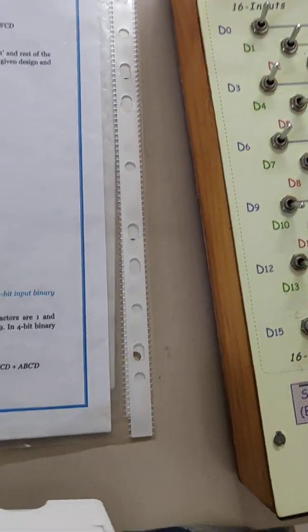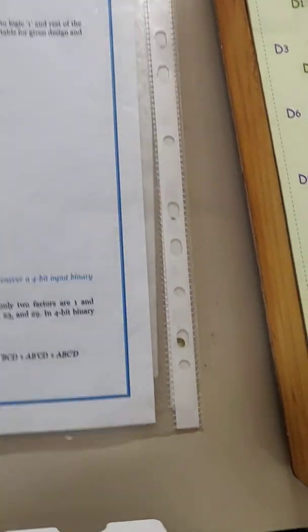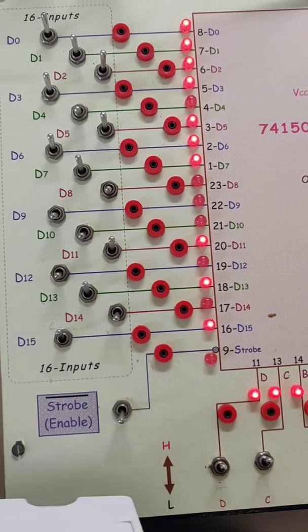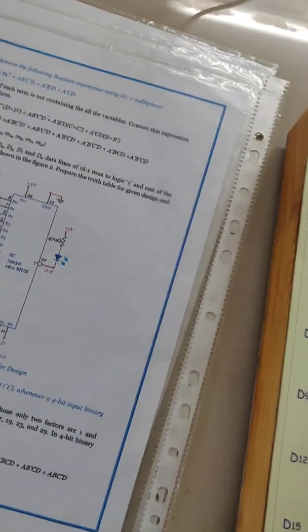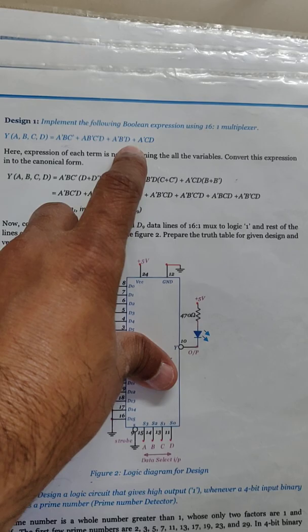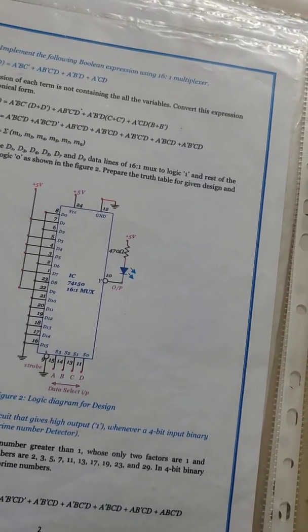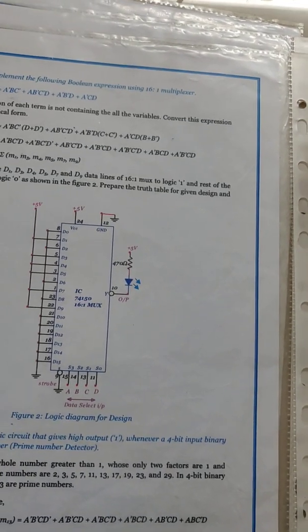The second part: this multiplexer can work as a universal logic circuit — any four-variable truth table can be implemented using this IC, just like a sum-of-products equation. The application given is: design and implement the following Boolean expression using a 16-to-1 multiplexer. The Boolean expression is given with some terms having three variables and some with four variables, so you need to convert it into the standard sum-of-products equation.